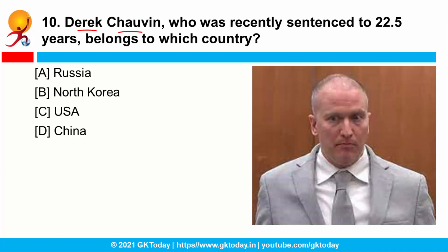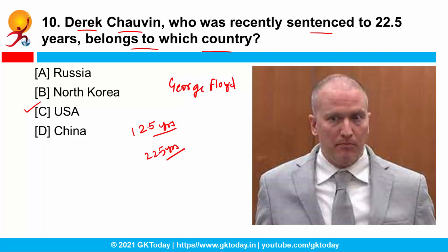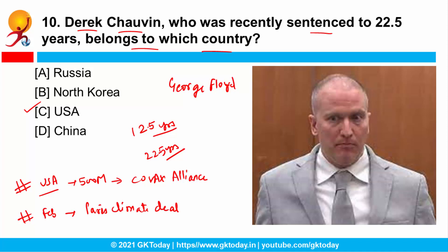Derek Chauvin, recently sentenced to 22.5 years, belongs to the USA. A US court sentenced former police officer Derek Chauvin to 22 and a half years in jail for the murder of George Floyd. His death created a huge outcry against racial injustice in the USA and worldwide. Under state guidelines the sentence would have been just 12.5 years, but the court exceeded that. This is one of the longest prison terms ever imposed on a US police officer. Also, the USA has announced a donation of 500 million COVID-19 vaccine doses to lower-income countries through the COVAX Alliance. In February, the USA rejoined the Paris Climate Deal after having previously exited, returning just 107 days later.